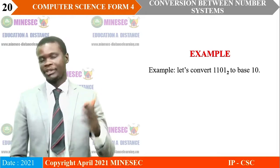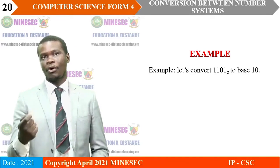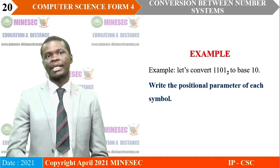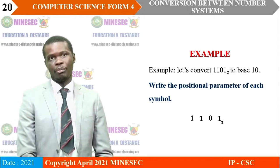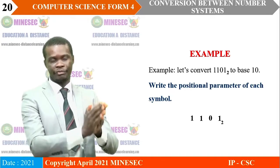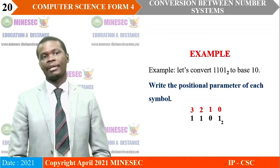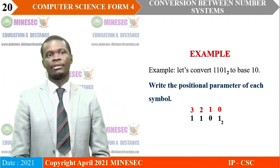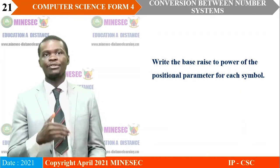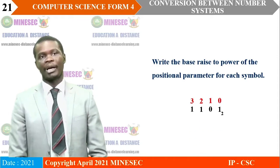Let's apply this to convert 1 1 0 1 base 2 to base 10. Step 1: we write the positional parameters. Starting from the least significant digit: 0, 1, 2, 3. Step 2: we write the positional values — the base is 2, so we have 2 to the 0, 2 to the 1, 2 to the 2, and 2 to the 3. Step 3: multiply each digit by its positional value: 1 times 2 to the 3, plus 1 times 2 to the 2, plus 0 times 2 to the 1, plus 1 times 2 to the 0, then add the results.